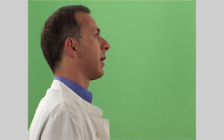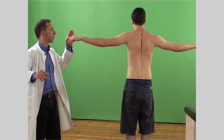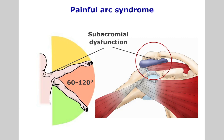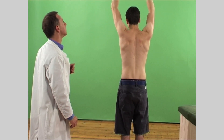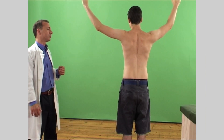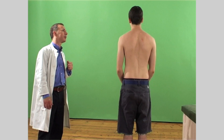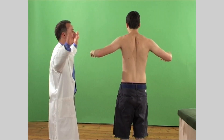Look for the characteristic patterns of pain related to movement. For example, in subacromial dysfunction or impingement, there will be a painful arc of movement between 60 to 120 degrees of abduction, with relatively little discomfort at the start and end of the movement. In contrast, in acromioclavicular dysfunction, pain would be most noticeable from about 170 to 180 degrees of abduction or flexion. In adhesive capsulitis or frozen shoulder, there will be a generalized restriction of most movements, but in particular in abduction and external rotation.